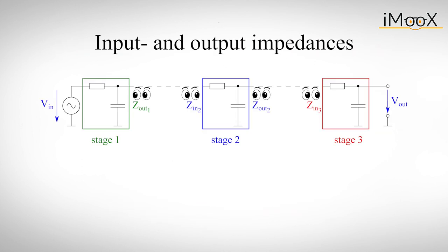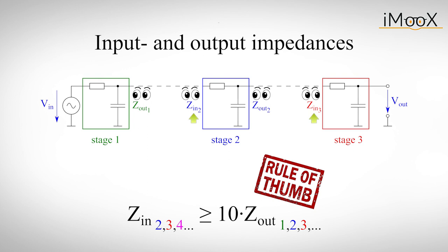This can only work if we keep the input and output impedance of each individual stage in mind. Every additional stage will always influence the behavior of the previous one. A good rule of thumb is to ensure that the input impedance of every stage is at least ten times larger than the output impedance of the previous one.